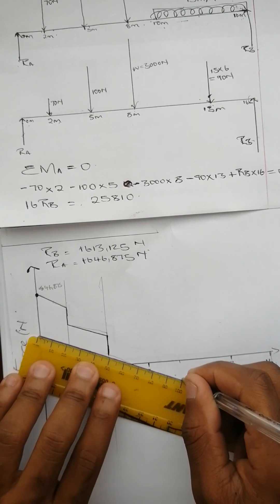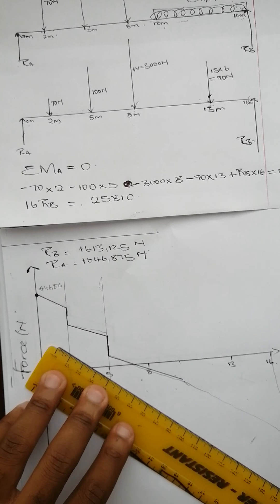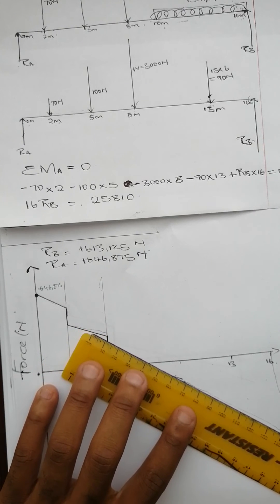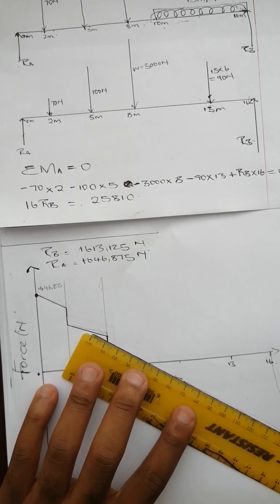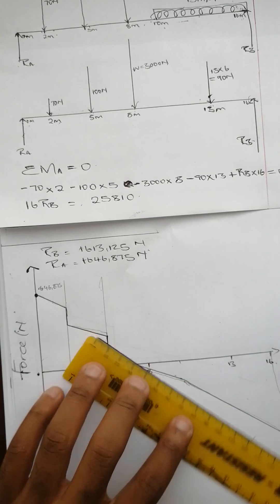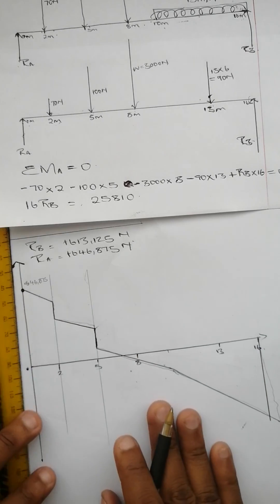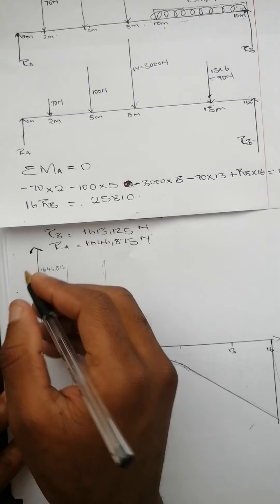Continue with the same gradient up until 10 meters. At 10 meters there's another distributed load, so it slants at a steeper gradient, goes up until 16, and it comes back. Then you are done.